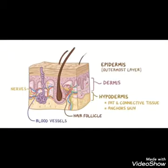As we all know, skin is comprised of three layers: epidermis, that is the outermost or superficial layer; beneath it is the dermis, which contains hair follicles, blood vessels and nerves; and below it is the hypodermis, which is composed of fat and connective tissue and anchors the skin.